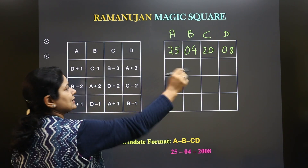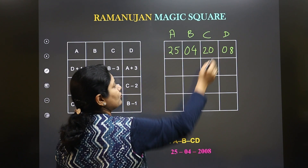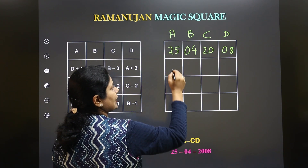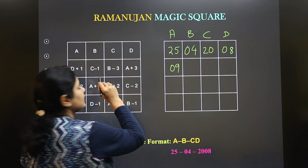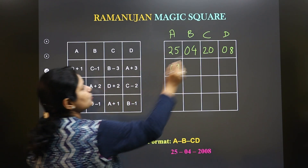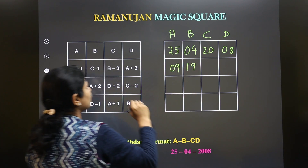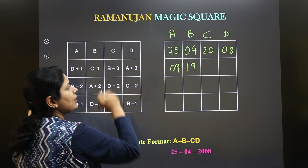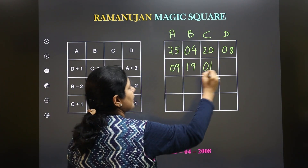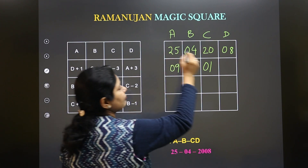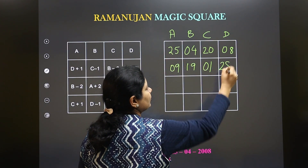Following the formula for the second row: D plus 1 — the value of D is 08, so 08 plus 1 will be 09. Then C minus 1: 20 minus 1 will give you 19. B minus 3: 04 minus 3 will give you 01. A plus 3: 25 plus 3 will give you 28.